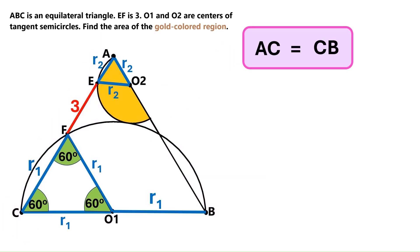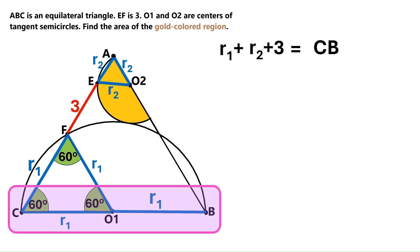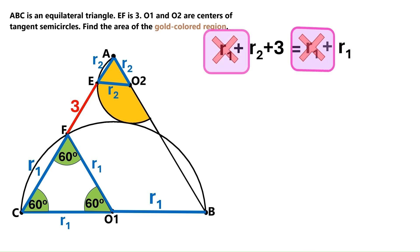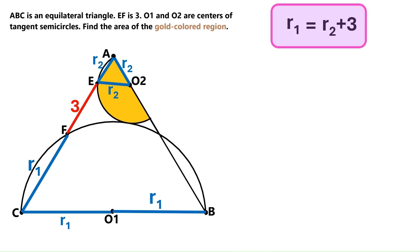We can express that as AC equals CB. AC is basically R1 plus R2 plus 3. So, let's change this AC to that. And CB is R1 plus R1, so let's put two R1 over here. Let's cancel out two extra R1s on each side, and it turns out R1 equals R2 plus 3. Let's keep this super important finding up here.